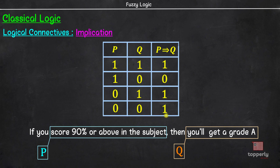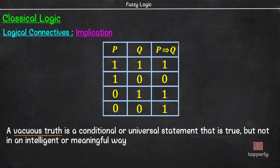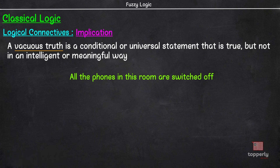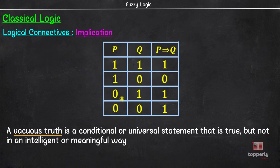I have used the term vacuous truth. A vacuous truth is a conditional or universal statement that is true but not in an intelligent or meaningful way. For example, suppose you are in a room full of people and none of them have a phone with them at all, including you. You get up and declare that all the phones in this room are switched off. This statement is technically true because no one has phones in their hands, so any phone in the room can be considered as switched off. That is why in the last two cases of the truth table, P implies Q will be taken as true, or to be precise, taken as vacuously true. The point here is that the use of 'implies' in logic is very different from its everyday language use to reflect causality.